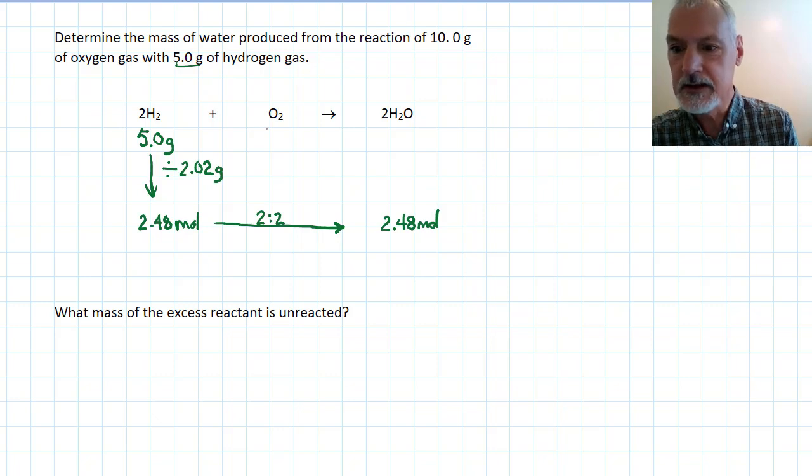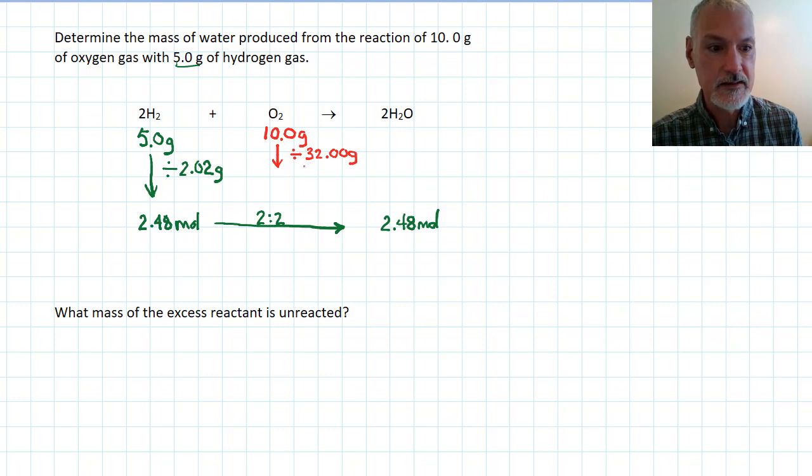Now I'm going to repeat this calculation by looking at the oxygen. I have 10 grams of oxygen. I'm going to take that and convert it into moles by dividing by the molar mass of O2 which is 32 grams per mole. That division gives me 0.313 moles.